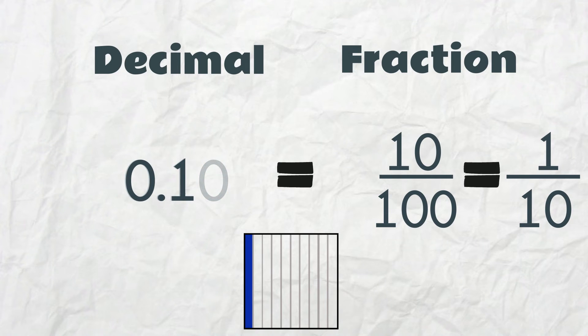10 hundredths is written as 0.1. The last 0 is not needed.